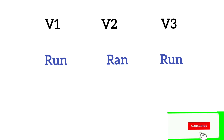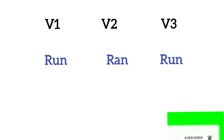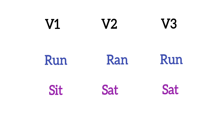I'm going to tell you the three forms of some commonly used verbs. First is 'run' — run means bhaagna (to run). Its second form is 'ran' and third form is 'run'. Next is 'sit' — sit means baithna (to sit). Its second form is 'sat' and third form is also 'sat'.